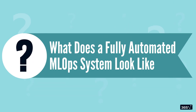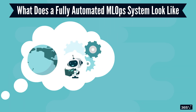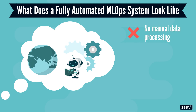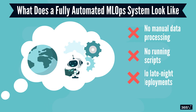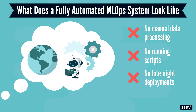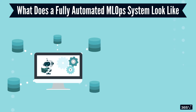What does a fully automated ML Ops system look like? Imagine a world where your ML Ops system takes care of everything for you — no manual data processing, no running scripts, no late-night deployments. In an ideal setup, your system should be able to pull in and pre-process data from multiple sources automatically.